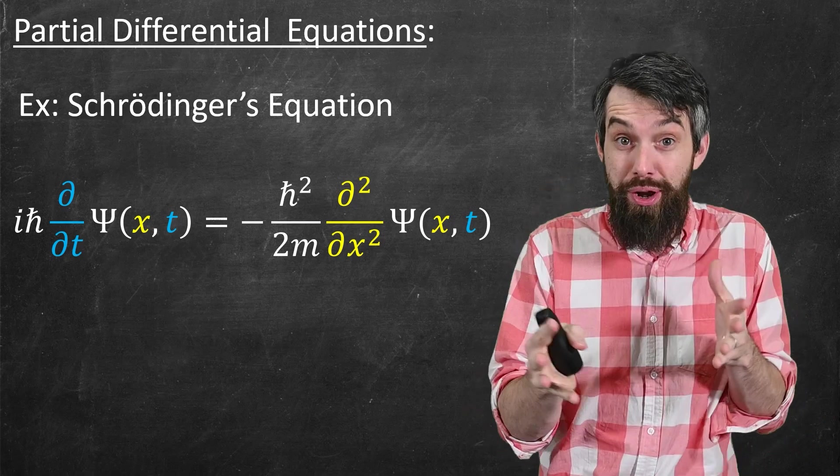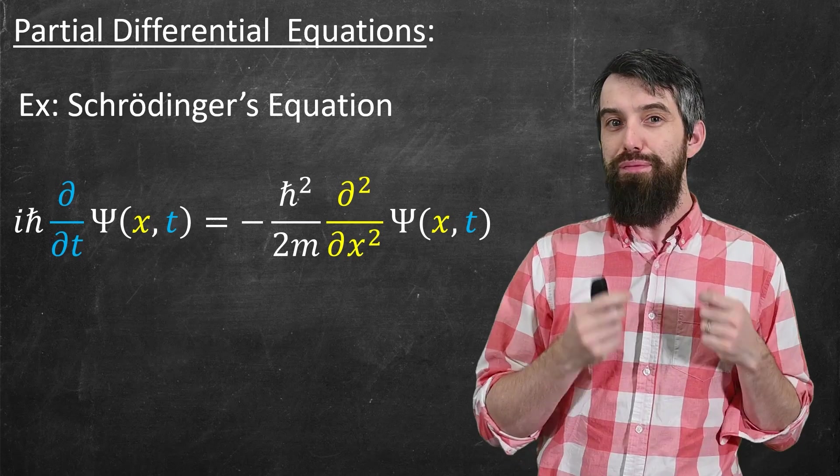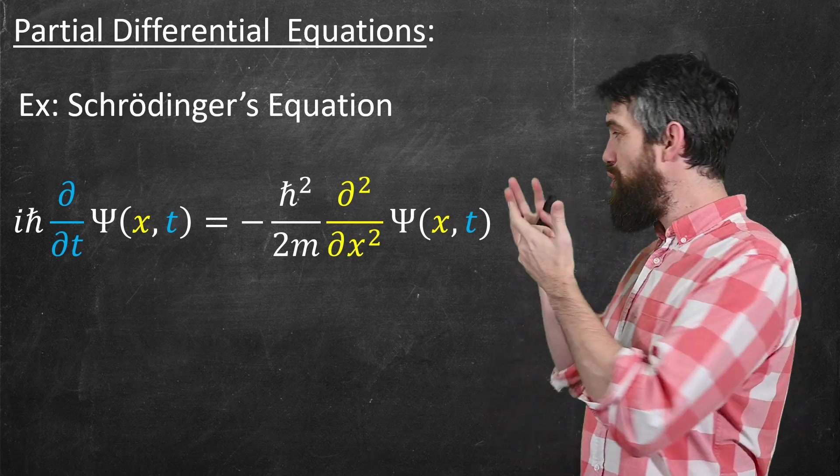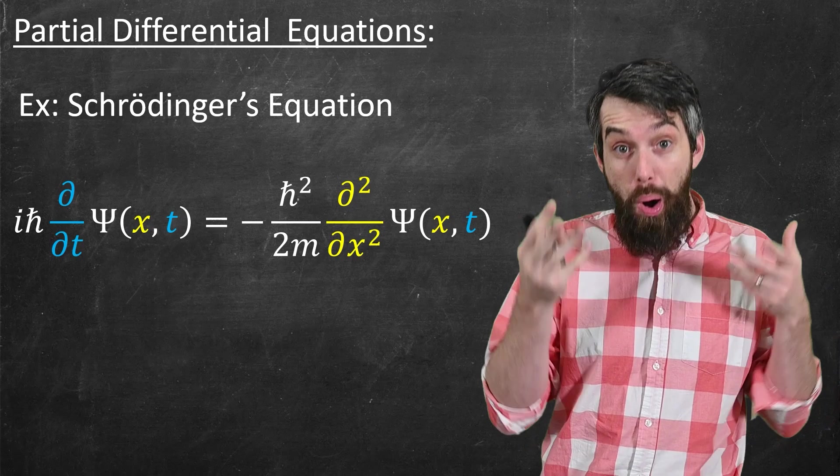In this equation, Schrödinger's equation from quantum mechanics, one of the most important differential equations that there is, we have some function that depends on both x and t. And then you have derivatives with respect to t, and derivatives with respect to x. They're partial derivatives now.